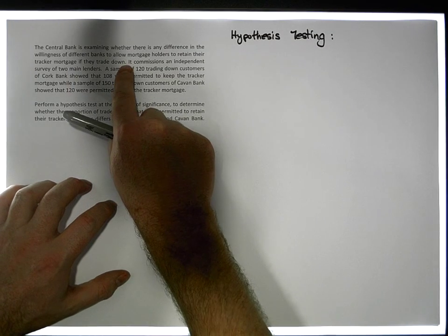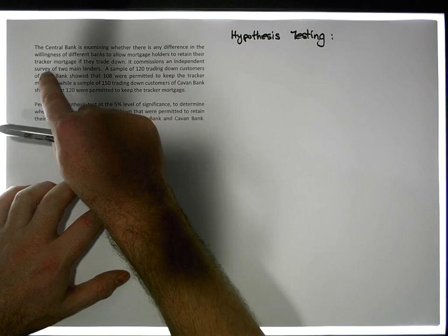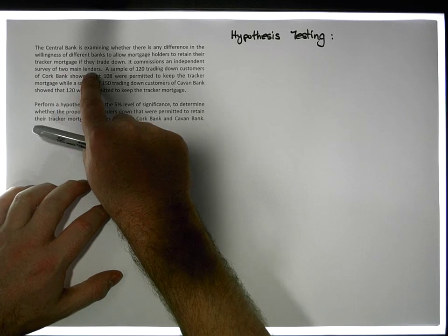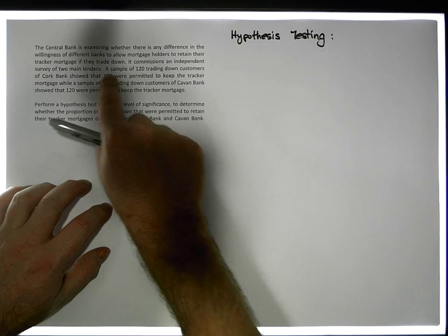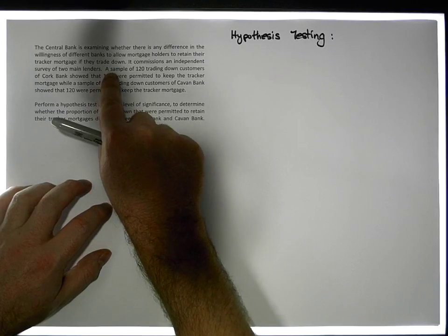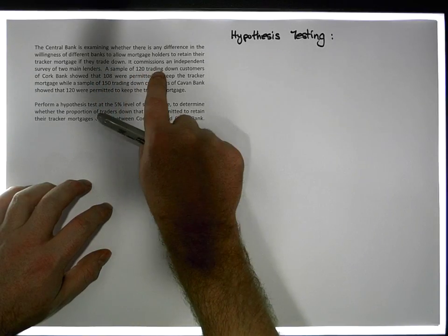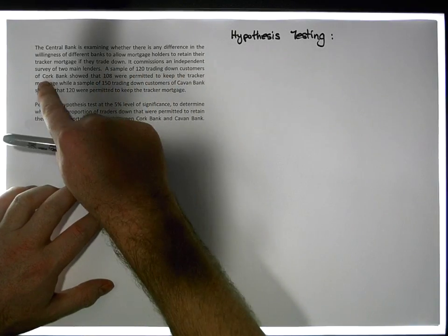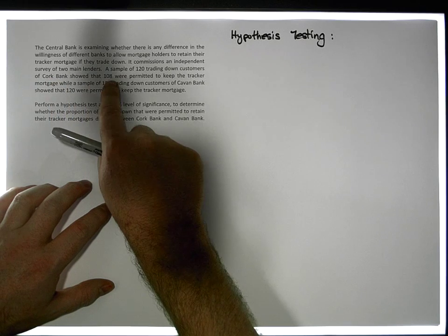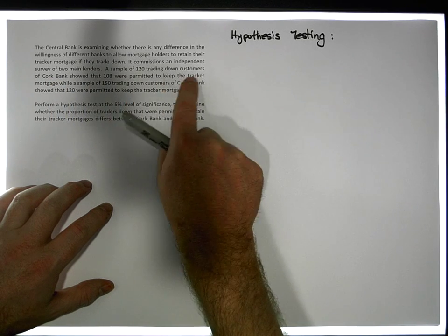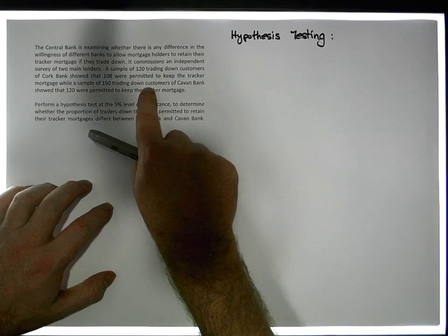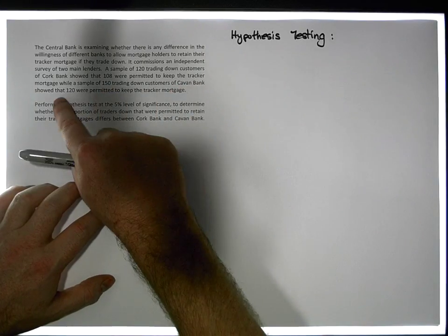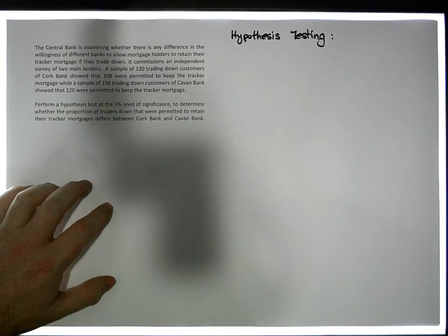The bank has commissioned an independent survey of two main lenders, two banks. The information provided is: a sample of 120 trading down customers of a bank in Cork showed that 108 of them were permitted to keep their tracker mortgage, while a sample of 150 trading down customers of a bank in Cavan showed that 120 were permitted to keep their mortgage.